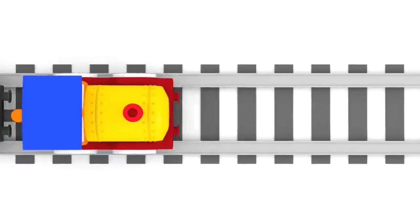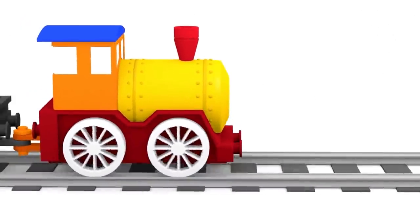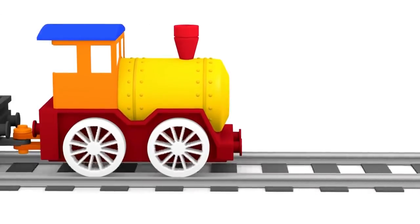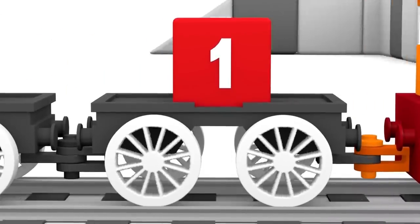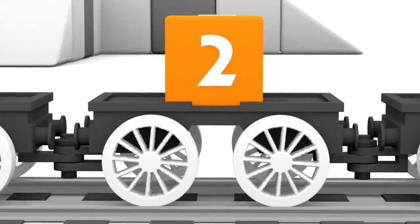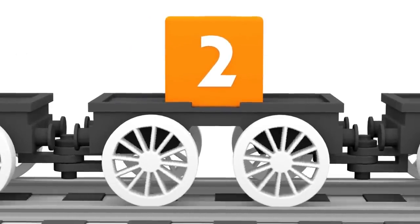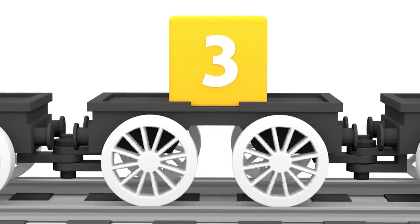Look at our super colour train locomotive riding along the railway. The wagons are carrying coloured number cube blocks. Red 1, orange 2, yellow 3.